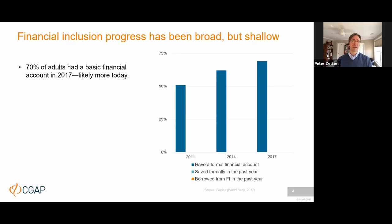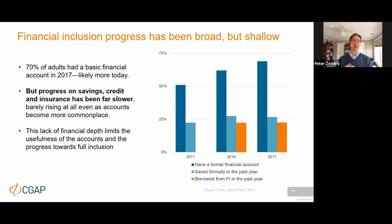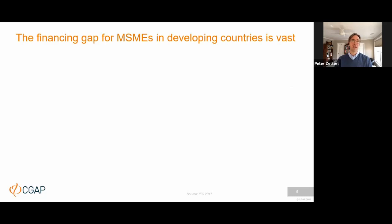Overall, these numbers tell the story of a real broadening of financial inclusion. As a result, 70 percent of adults had access to a basic financial account in 2017. We don't have the latest index yet because of COVID, but likely those numbers are even higher, probably in the order of 75 percent. But what's notable is that even as we made such great progress on accounts, progress on savings, credit, and insurance products has been a lot slower — in fact it's barely risen at all.